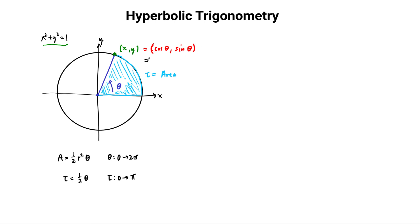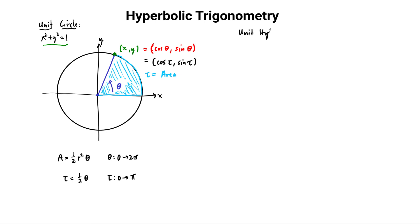You're probably wondering why we're switching trig functions to be in terms of the area of the sector. Here's the reason: we want to now switch out this unit circle for a hyperbola - a unit hyperbola. So this is a unit circle, and we want to swap it out for a unit hyperbola.